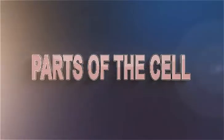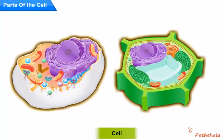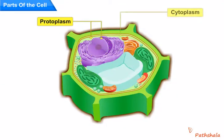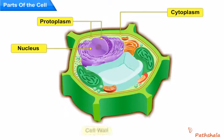Parts of the cell. Now let us discuss about various types of cells and various parts of the cell. The entire content of a living cell is known as protoplasm. It includes the cytoplasm and the nucleus. Protoplasm is called the living substance of the cell.